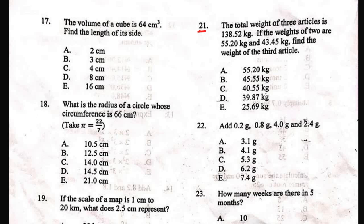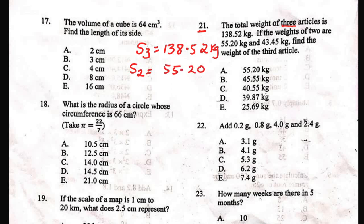This question says the total weight of 3 articles is 138.52 kg. So there are 3 articles here. The sum of 3 is equal to 138.52 kg. Now, they gave us the weight of 2 of them. Let's find out the sum of 2 of them, which will be 55.20 plus 43.45.